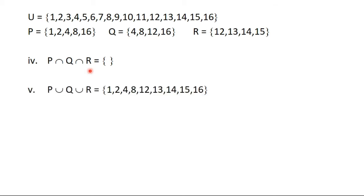Part v: P union Q union R. To find the union of sets, you put all the sets together. So we add the members of P, Q and R: 1, 2, 4, 8, 12, 13, 14, 15 and 16. Remember that if a member appears in more than one set — for example 4 is in both P and Q — we write it only once.